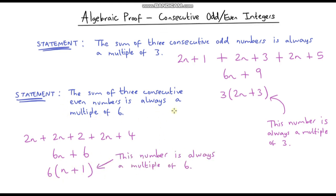So we have just proved that the sum of three consecutive even numbers is always a multiple of 6. Hopefully you found this interesting — in the next video we're going to continue our journey with algebraic proof and move on to some slightly more tricky examples. Hope to see you then!